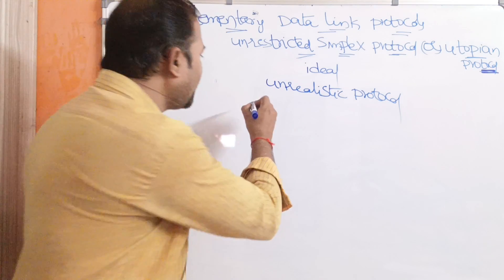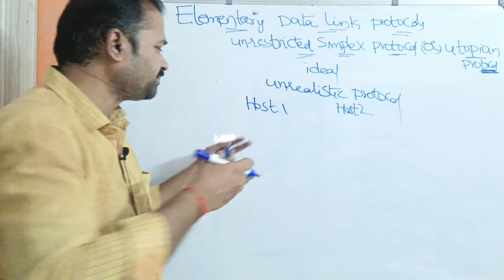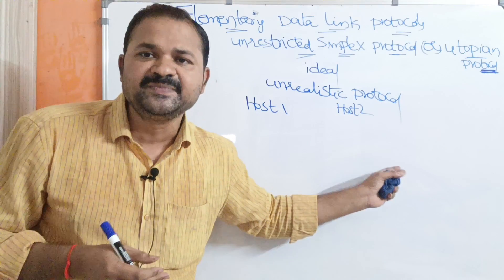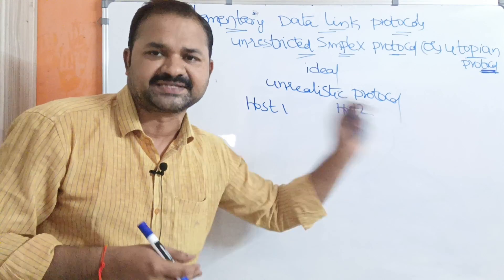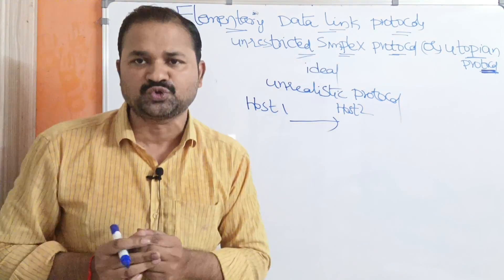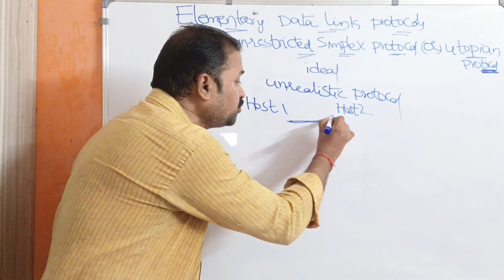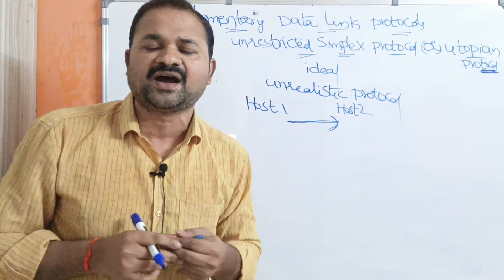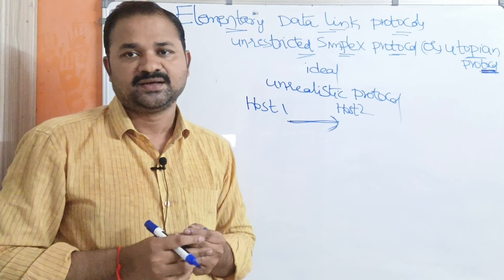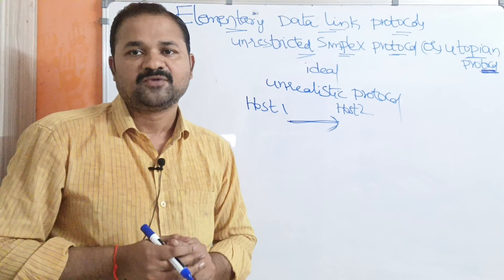We have two hosts: host one, which is the sender or transmitter, and host two, which is the receiver. Here, host one wants to send some data to host two, so data can be transmitted only from host one to host two. After receiving the data, host two cannot provide any acknowledgement to the sender, and host two cannot send any data back to host one, because the channel is simplex. That is why it is called a simplex protocol.